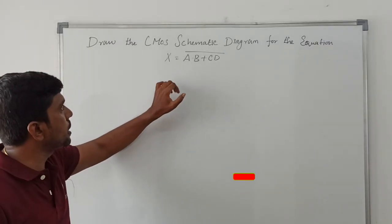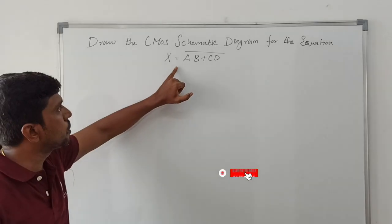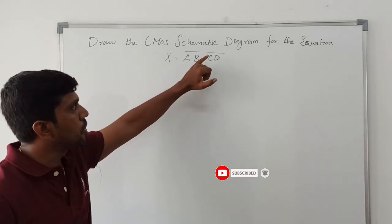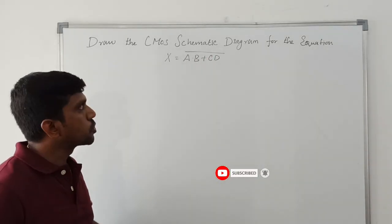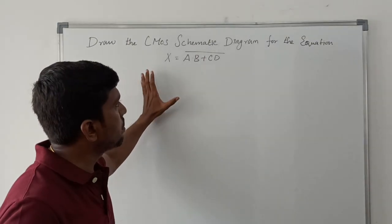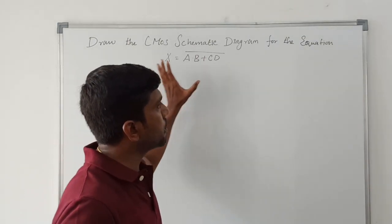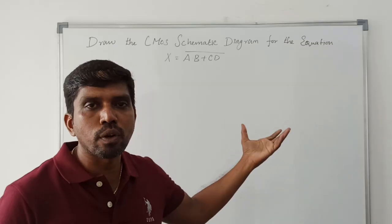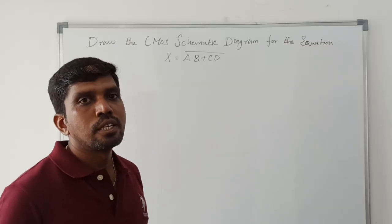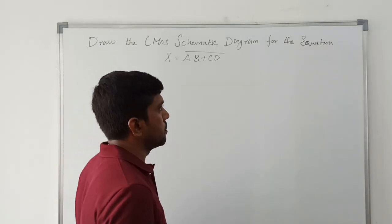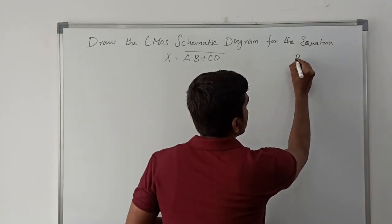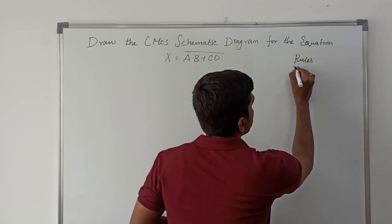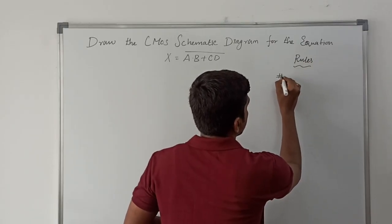The boolean expression is x equal to A dot B plus C dot D, whole complement. Before drawing the schematic diagram, first I will write the rules. So what are the rules we are following to draw the schematic diagram? Here we are following two rules.